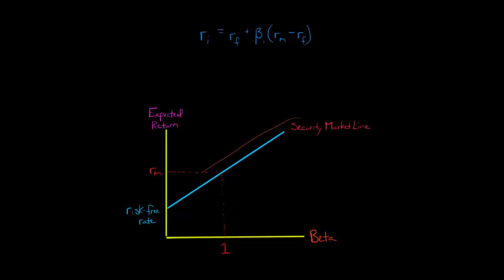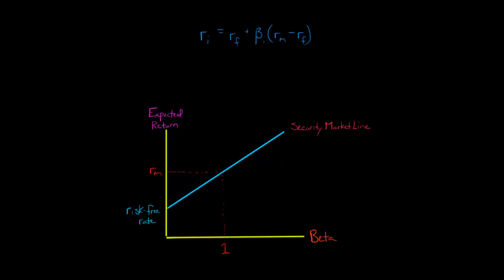Here we've got our security market line with beta on the x-axis and the expected return of the security on the y-axis, and we've got the risk-free rate here. This line going out is the security market line. If the market portfolio is efficient, all the different stocks — like Microsoft, Caterpillar, and Walmart — will all plot at a different point on the security market line.